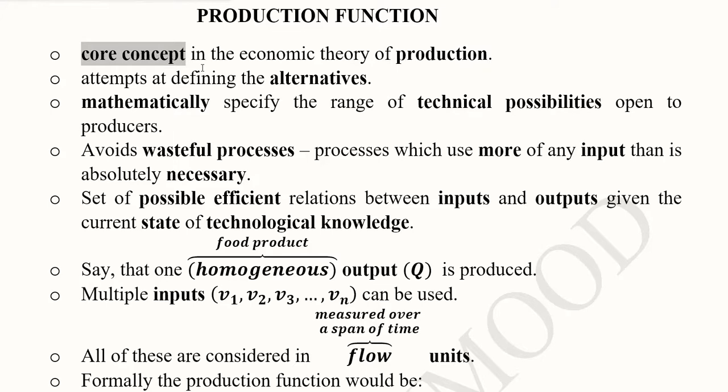As already mentioned, this is one of the core concepts in the economic theory of production. It basically attempts at defining the alternatives that a producer has, and these alternatives are mathematically specified as the range of technical possibilities open to the producer.